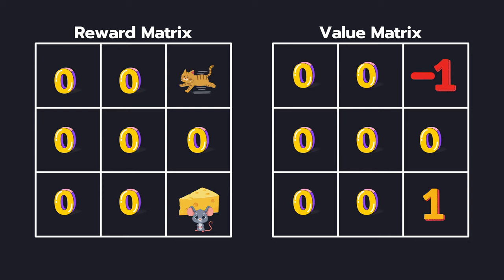We can use this to calculate the value for this state as R(s,a) plus gamma times V(2,2), where R(s,a) we know is 0 and we can discount the value for the next state by 0.9 into 1 which becomes 0.9.